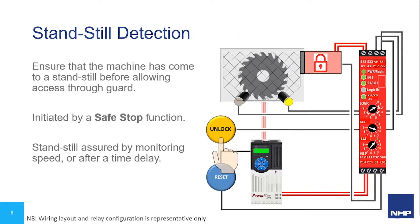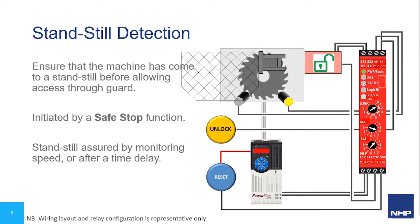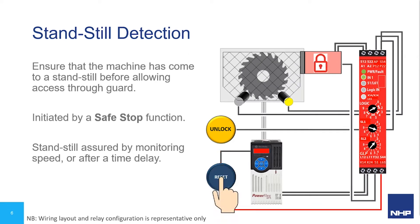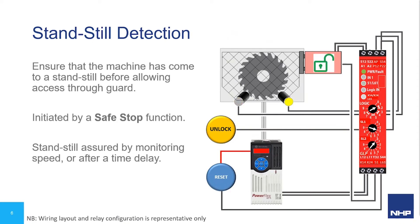For guard locking applications, we can ensure that the machine has come to standstill, or at least a safe speed, before allowing access — this is called conditional unlocking. It's used in cases where the load may have a long rundown time, where simply opening the guard and removing power won't leave enough time for the hazard to clear. Speed is measured by direct means like proximity sensors or encoders, or indirect means like back EMF monitoring.